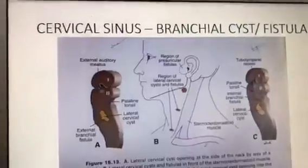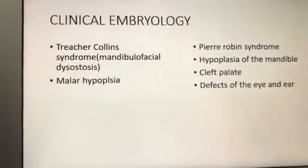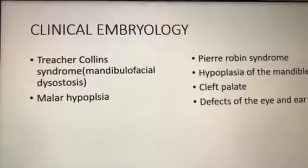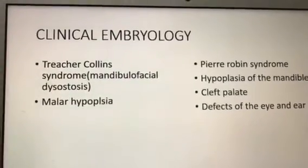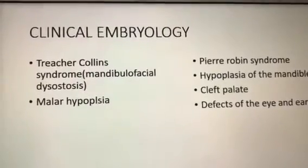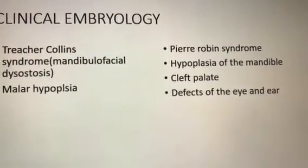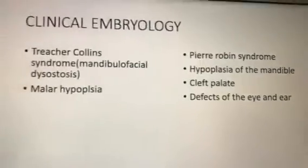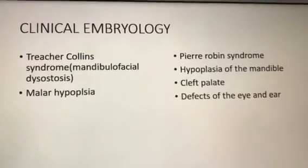For clinical anatomy of the first arch: Treacher Collins syndrome — also called mandibulofacial dysostosis — occurs when neural crest cell migration fails near the zygomatic area, leading to malar hypoplasia. Pierre Robin syndrome similarly involves failure of neural crest migration near the mandible, leading to hypoplasia of the mandible along with cleft palate and defects in the eye and ear. These two syndromes — Treacher Collins and Pierre Robin — are very important clinical embryology points for the pharyngeal arches.